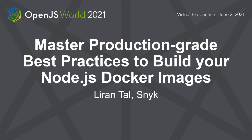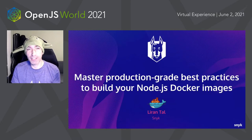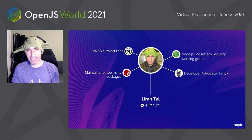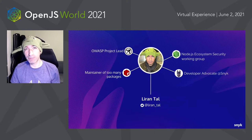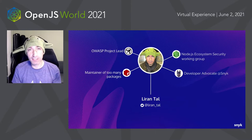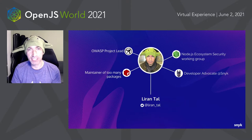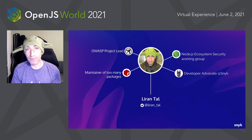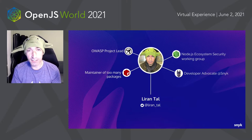Hey everyone, thank you for joining my talk on mastering production-grade best practices for building your Node.js Docker image. My name is Liron Tal, also known as that guy with the Yoda hat. I'm a developer advocate at Snyk, on a mission to help developers build applications securely using open source software. I'm actively involved in the Node.js security working group, OWASP, and different research and security best practices. If you want to connect, reach out on Twitter at Liron_Tal.